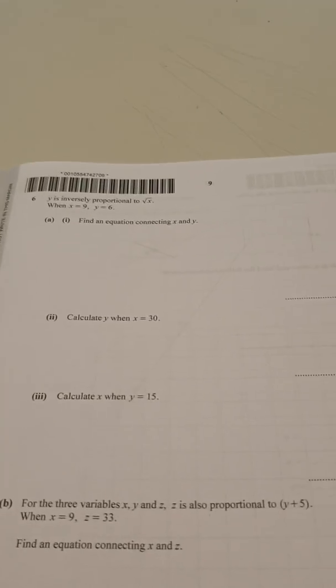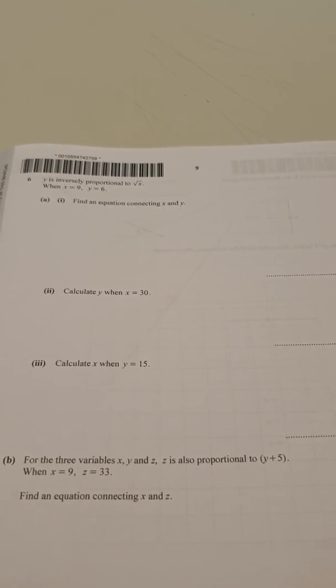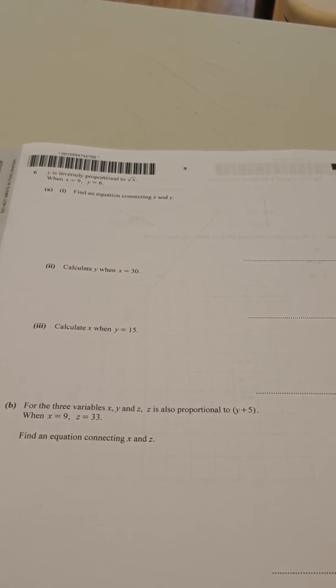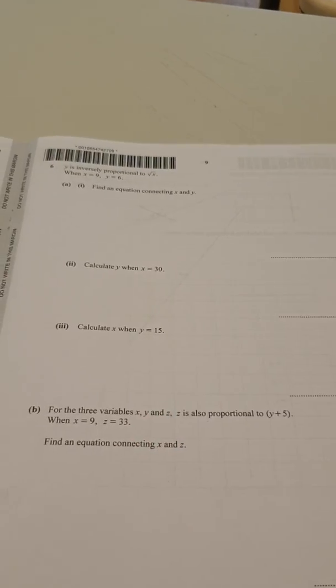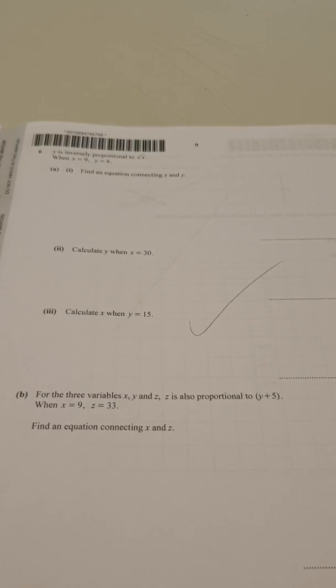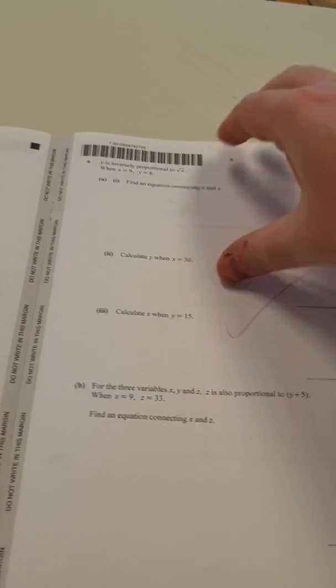Question six was in my list, inverse proportion, inverse proportion to the square root of x, generally not well answered by students, and then using three variables instead. Okay, it's a little twist, but certainly this topic was predicted. Part b, of course, is the AA star aspect of the question. Okay, moving on.